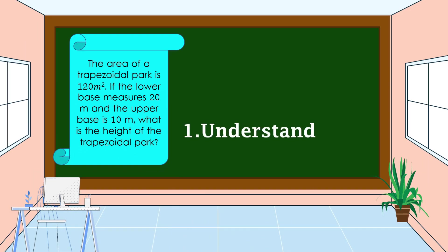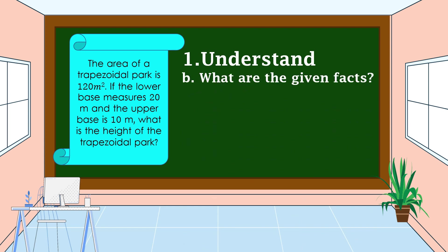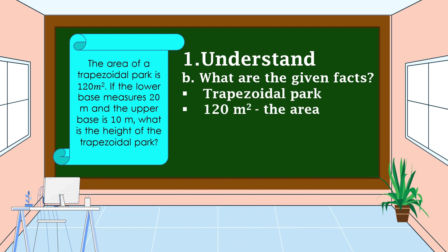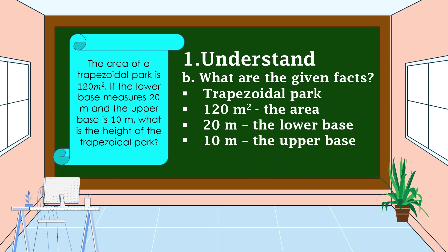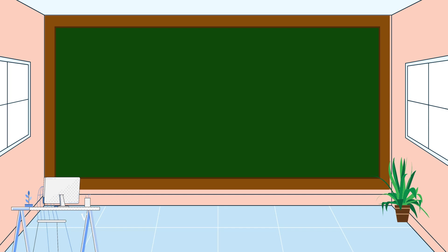We should also know what are the given facts. The given facts in this problem are: it is a trapezoidal park, the area is 120 square meters, the lower base is 20 meters, and the upper base is 10 meters. We already understand the problem.